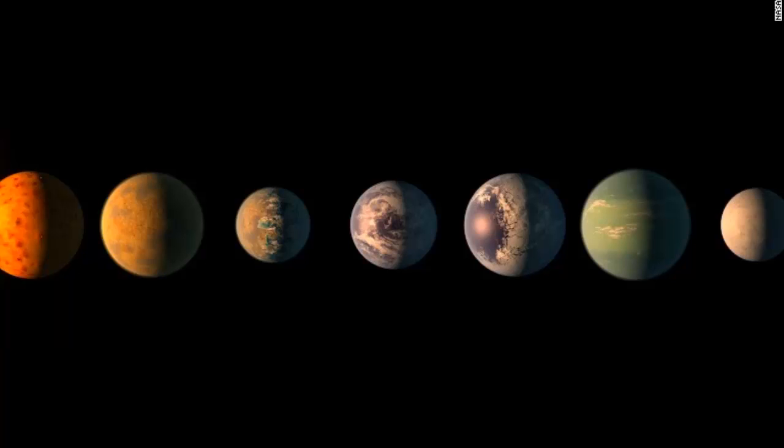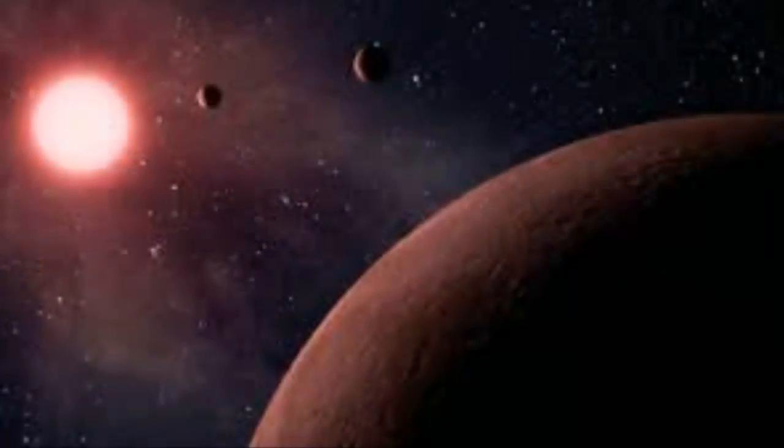The planets are so close to their star that it only takes them between 1 and 20 days to move around it. In contrast, our Sun's closest planet, Mercury, needs 88 days to move around it once.